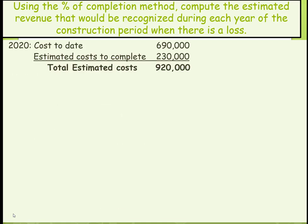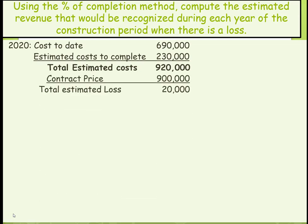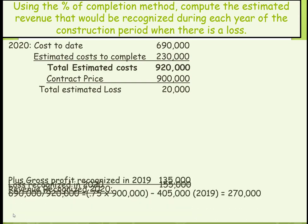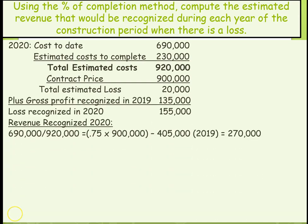In 2020, total estimated cost is $920,000. The contract price is $900,000, so there is now an overall estimated loss of $20,000. We have already recorded $135,000 in profit, so we will need to back that out, requiring us to recognize a loss in 2020 of $155,000.